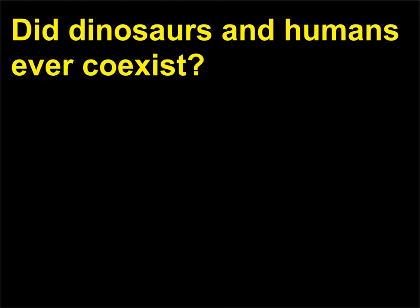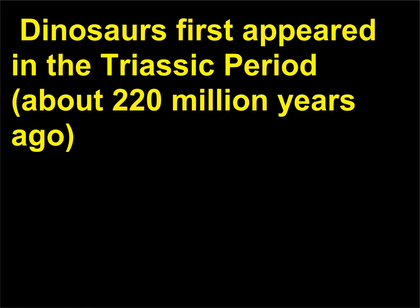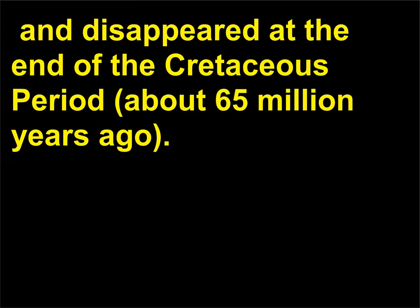Did dinosaurs and humans ever co-exist? No. Dinosaurs first appeared in the Triassic period, about 220 million years ago, and disappeared at the end of the Cretaceous period, about 65 million years ago.